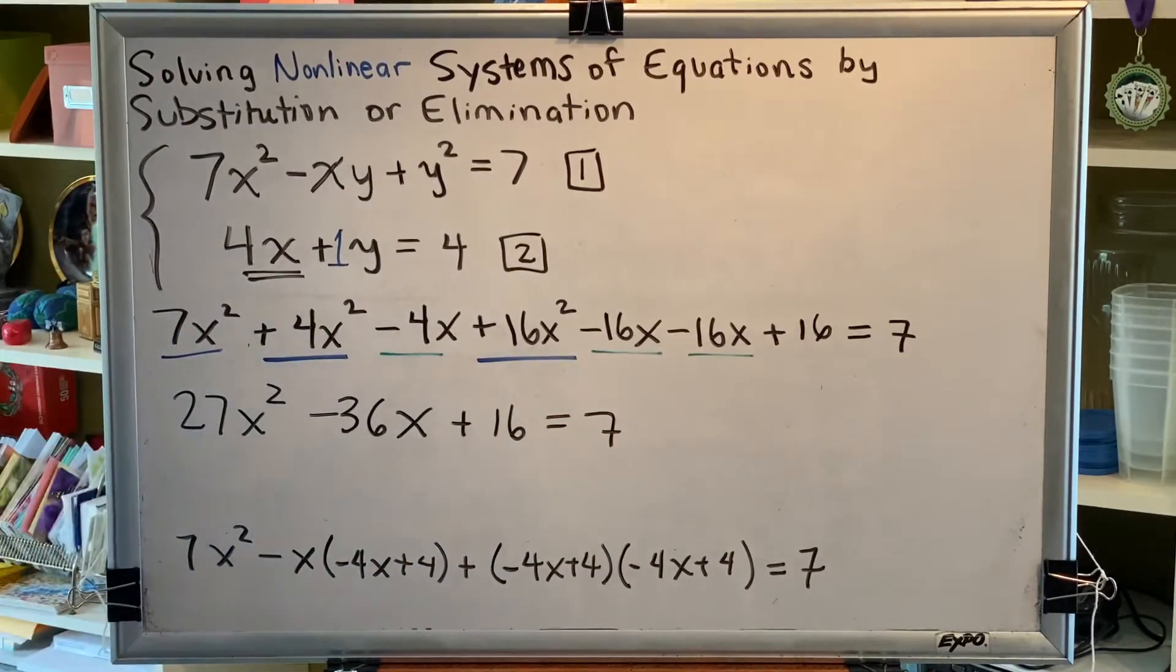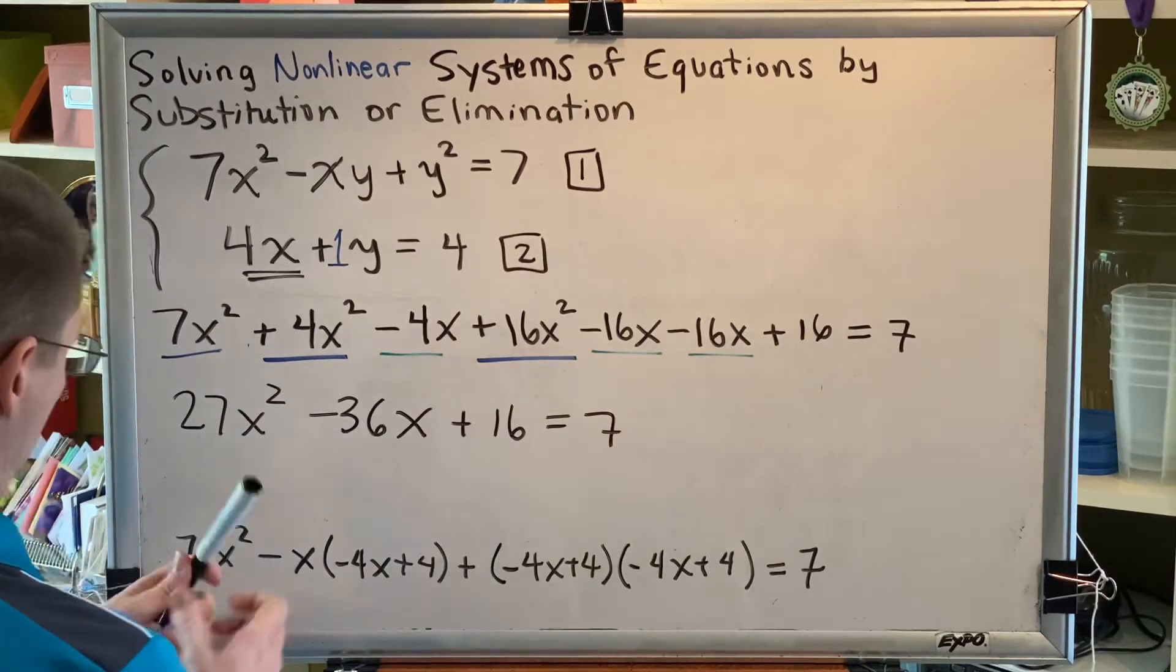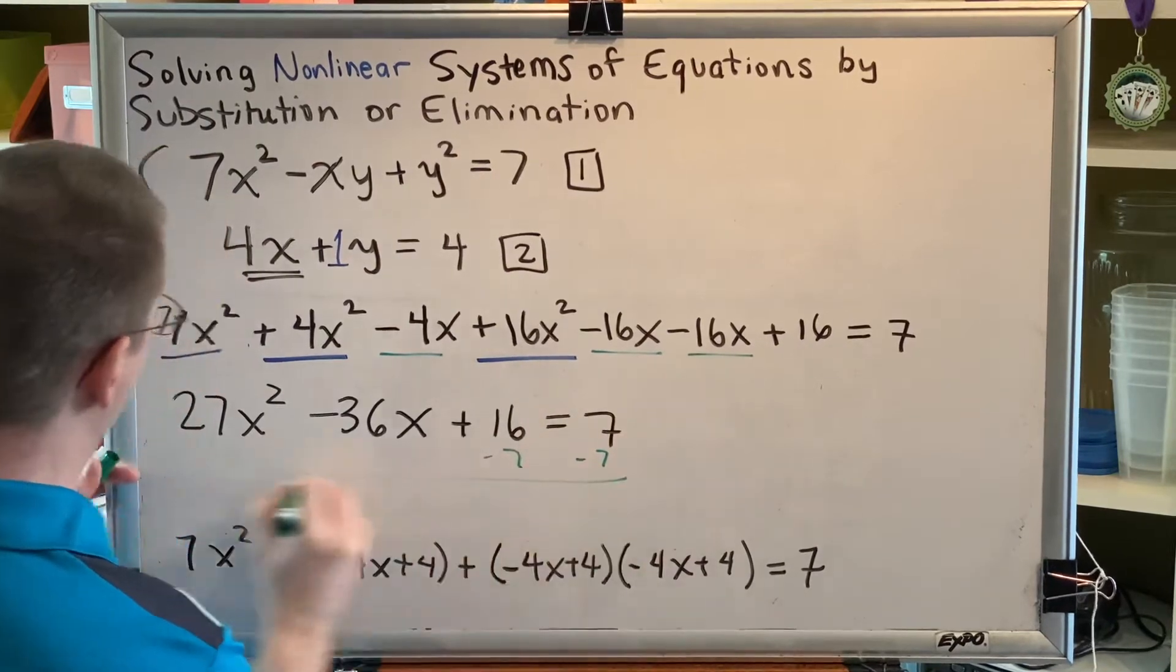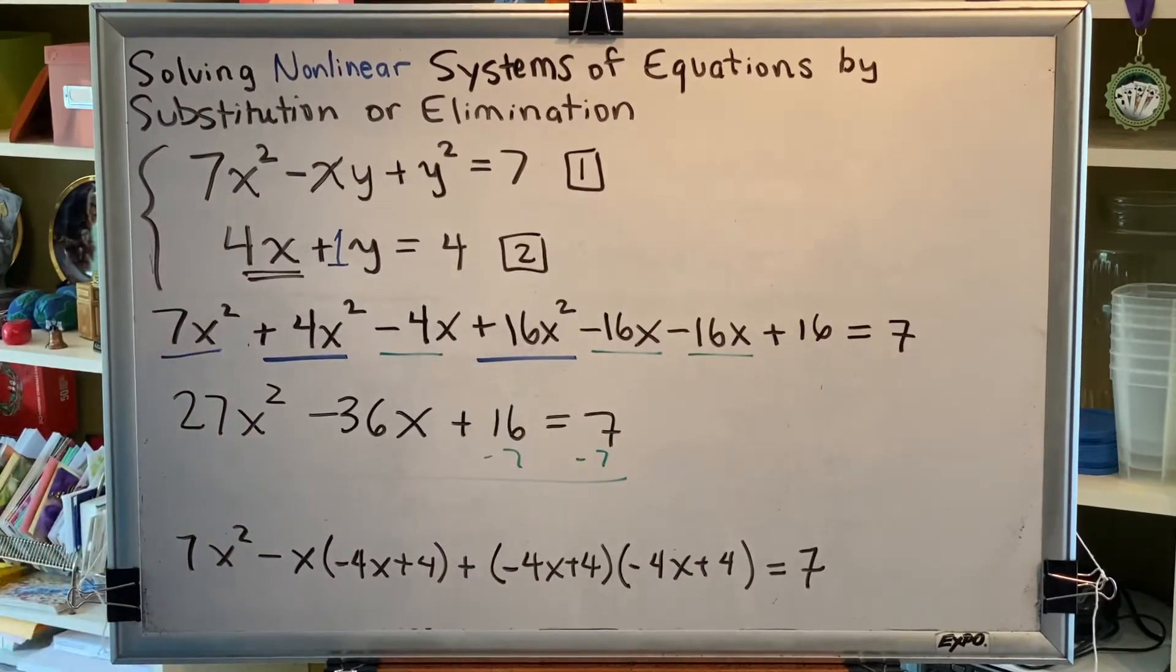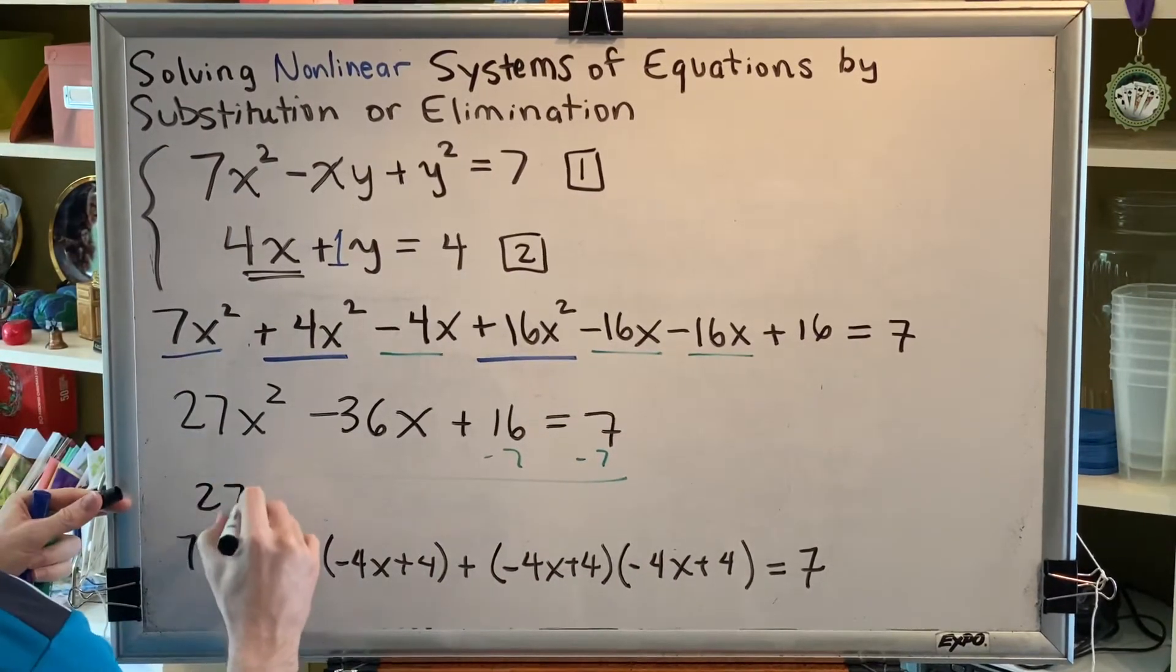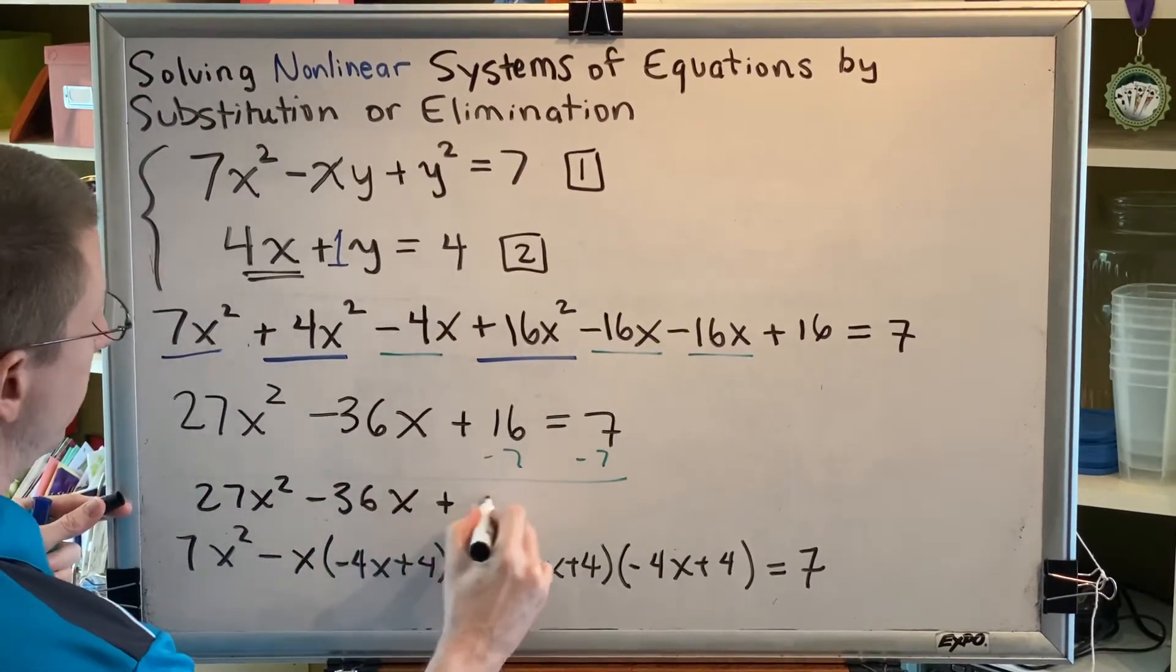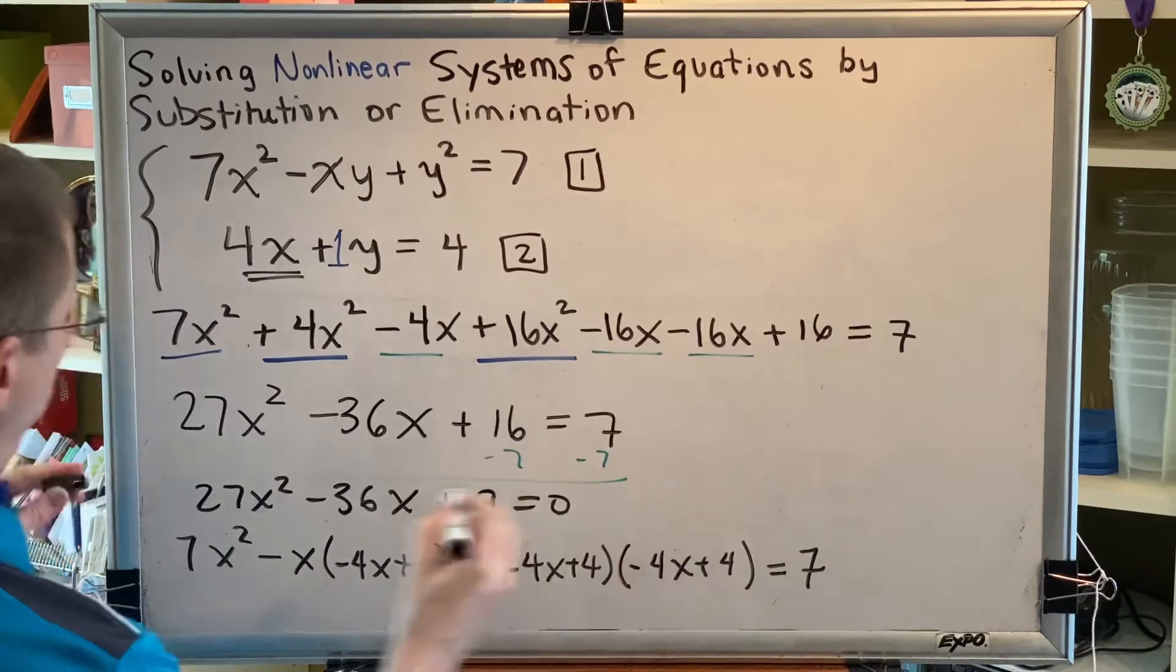This is a quadratic equation in one variable. And there are multiple ways to solve a quadratic equation in one variable. But the easiest is probably factoring. So let's see if we can get equal 0. Let's subtract 7 on both sides. So minus 7, minus 7. And we're going to have 27x squared, minus 36x, plus 9, equals 0.